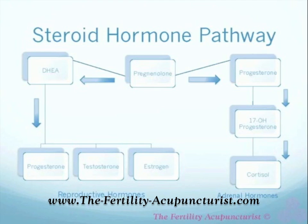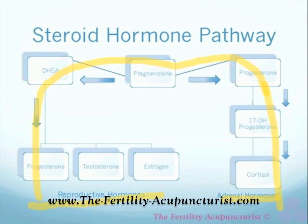I don't expect you to memorize this chart, but I put it here just to have an image in your mind. I call this the horseshoe. On the left we have the reproductive hormones, and on the right we have the adrenal hormones — we have stress. Ideally, we are evenly dividing between these two pathways.